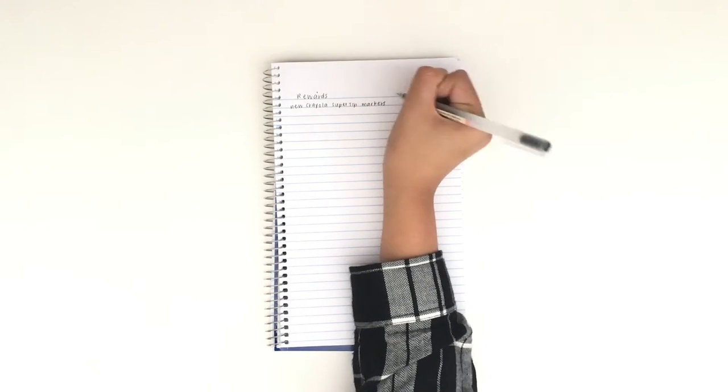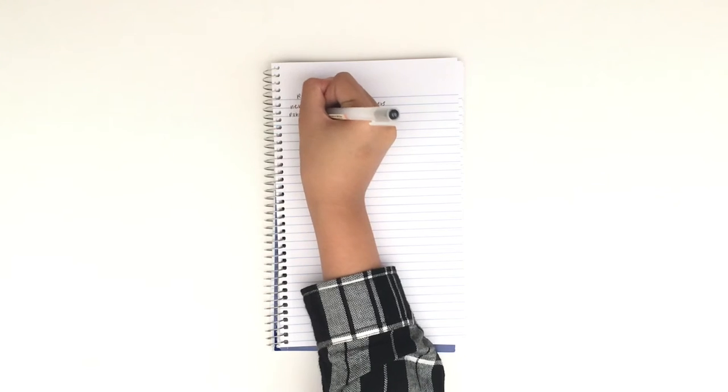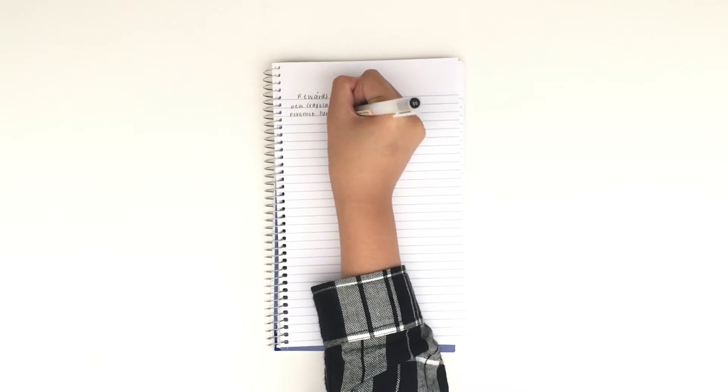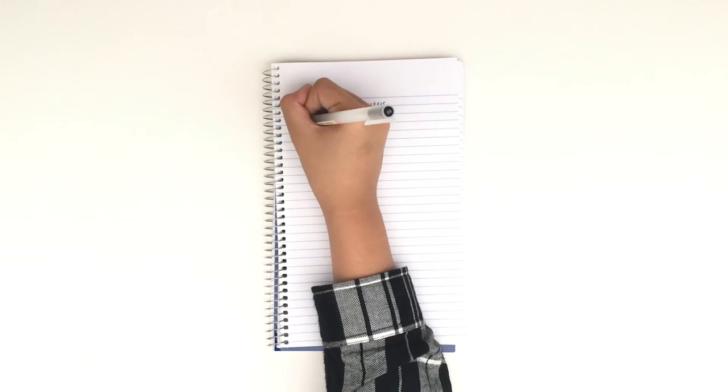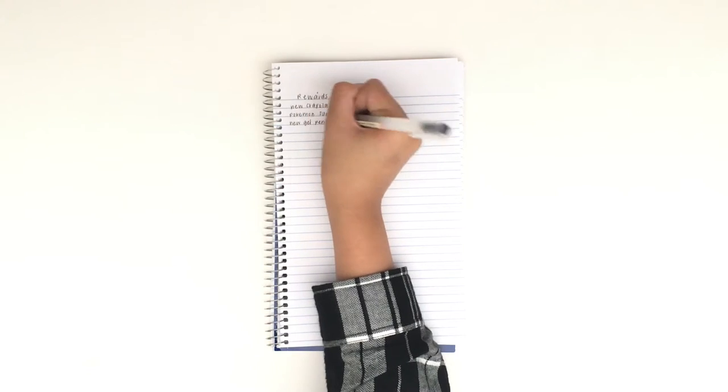Some examples on my list are new Crayola super tip markers, the Pokemon Sun and Moon game, new gel pens, and a ukulele because I want to learn how to play it.